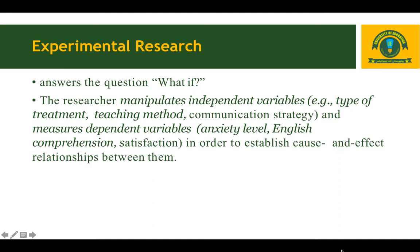Experimental research answers cause-and-effect questions. The researcher manipulates the independent variable, which could be a type of treatment, teaching method, or communication strategy, and measures the dependent variable, which could be anxiety level, English comprehension, or satisfaction. The goal is to establish the cause-and-effect relationship. Experimental research design is the design that truly helps to find out the hypothesis and identify the cause-and-effect relationship.